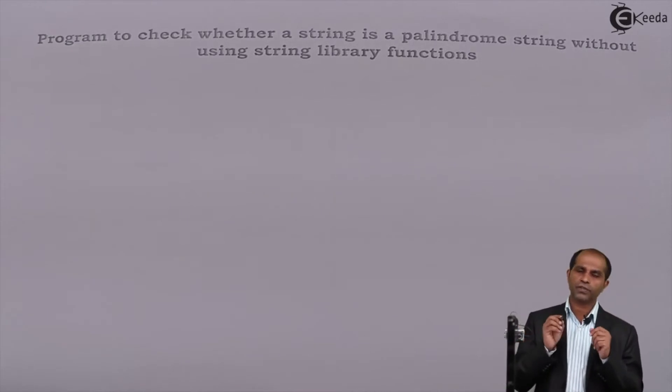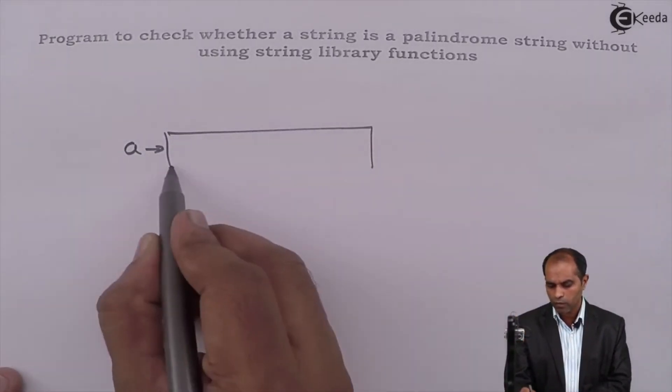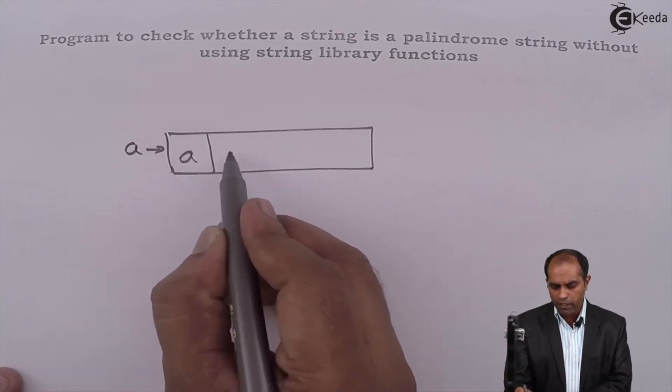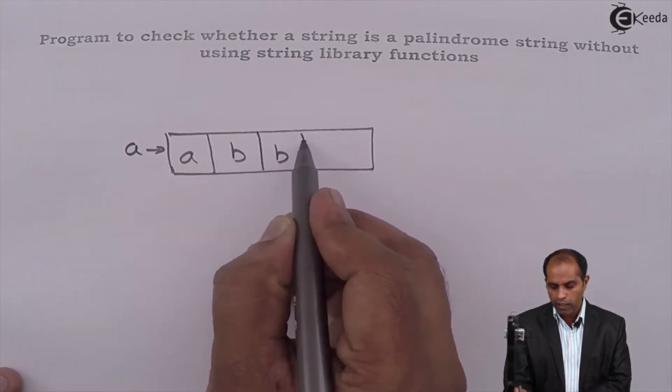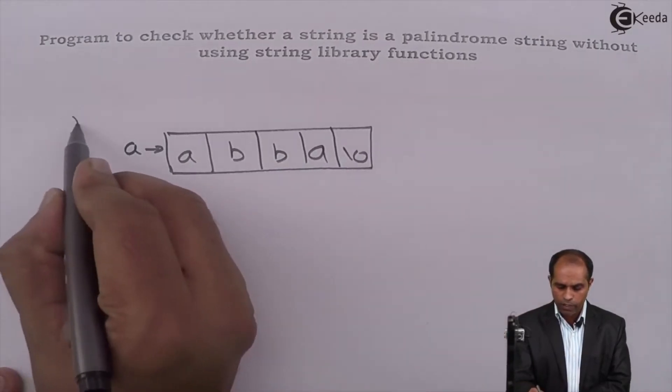As usual, first identify a string. Let the string be 'a'. So let me take a string which is a palindrome and a string which is a non-palindrome. So this is for the first example.